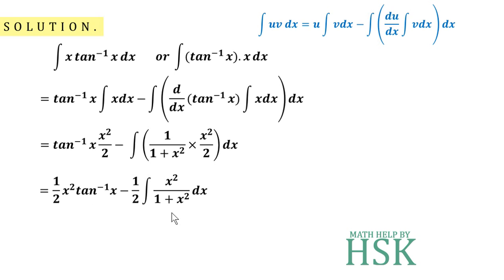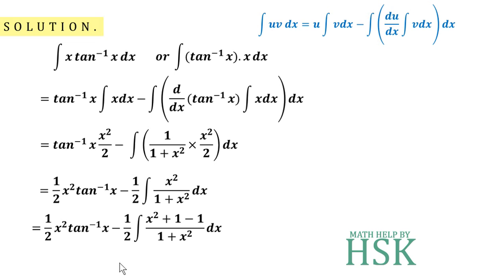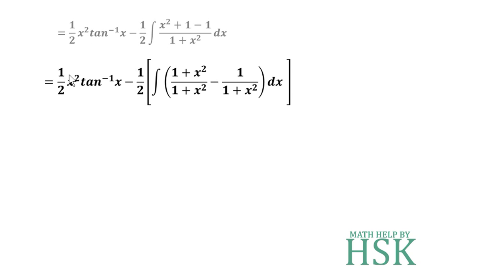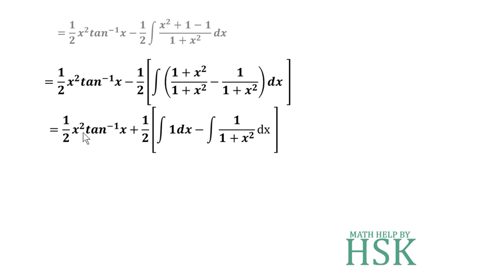To integrate x²/(1+x²), we apply a trick: we subtract 1 and add 1 in the numerator, writing x² as (x²+1)−1. This allows us to split the fraction as (1+x²)/(1+x²) minus 1/(1+x²), which is 1 minus 1/(1+x²). The (1+x²) terms cancel, giving us the integral of 1 minus the integral of 1/(1+x²).